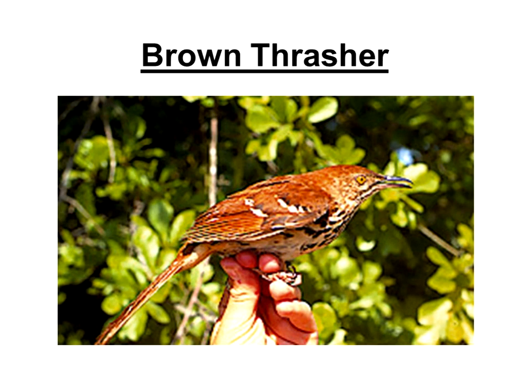Here's a brown thrasher, which is the state bird of Georgia where I grew up. Brown thrashers love dense shrub areas and feed on the ground. In my backyard they do come and feed on seed and insects and the leaf litter beneath my feeders. This is a species attracted to my brush pile. For brown thrashers, I think they really do favor leaf litter — so if you maintain some areas of natural leaf litter instead of turfgrass, this will be a species that will benefit.